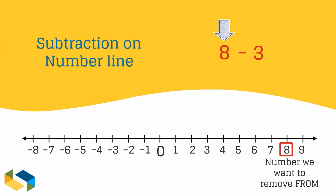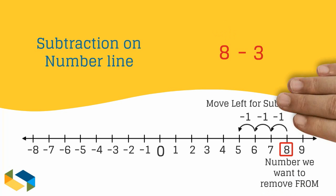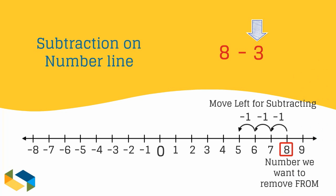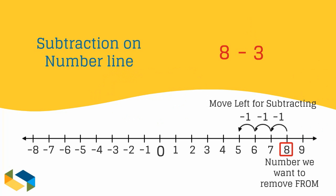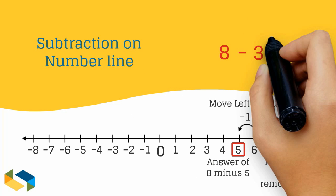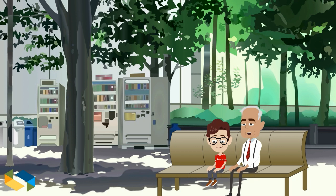We locate eight on the line, the number we want to remove from. We move three spaces to the left as we are subtracting. Remember, in addition we move to the right, so subtraction is the opposite of addition. Now we are at the number five, which is the answer. So eight minus three is five.